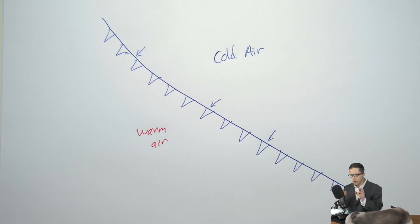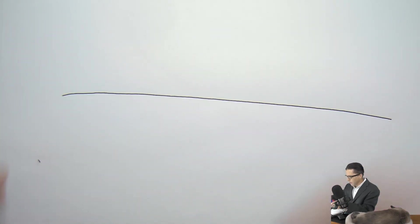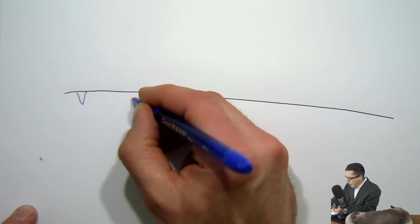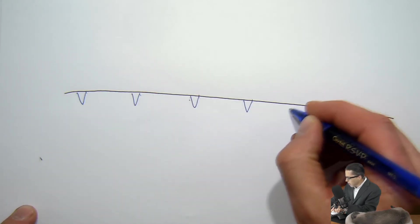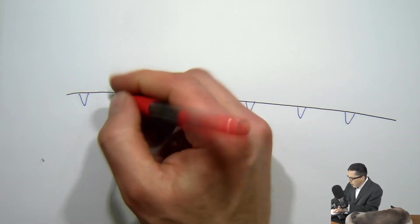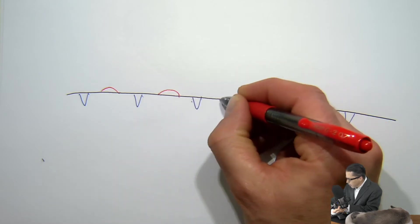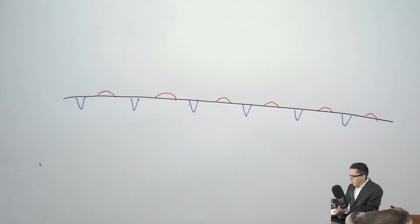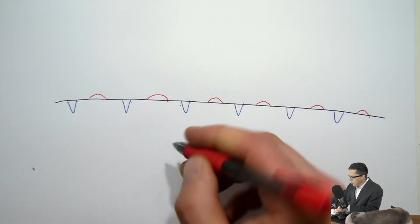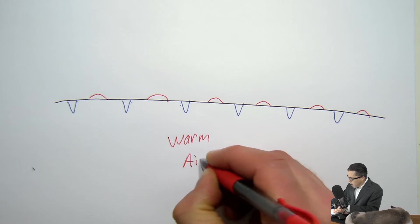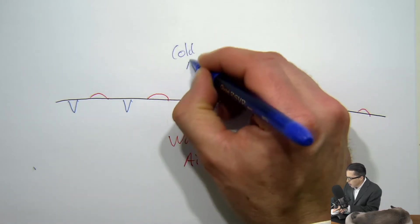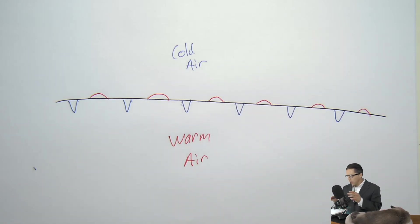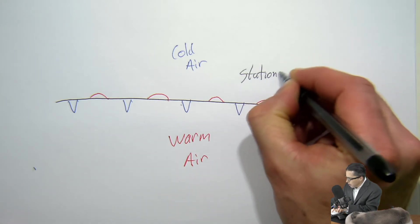There's another type of front where the two air masses come up against each other but neither one wins — it's called a stationary front. On a map, a stationary front has teeth on one side and humps on the other side. The warm air is behind the humps, the cold air is behind the teeth, and at this point in time neither is taking over the other.